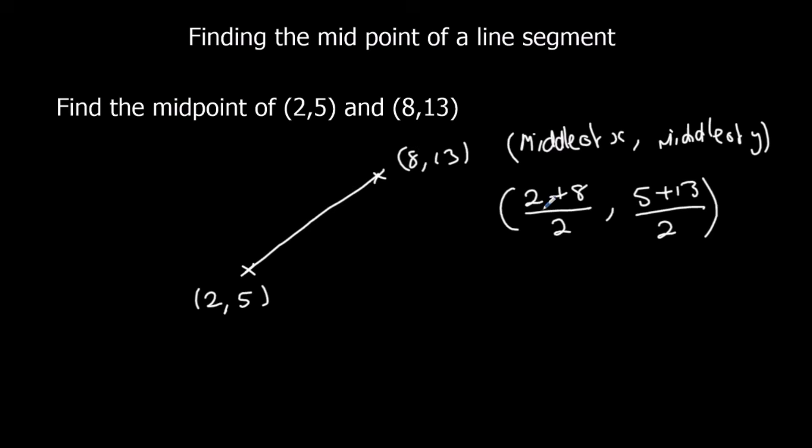So the easiest way to do that, add them up and half them. So, 2 plus 8 is 10, half of it is 5. 5 plus 13 is 18, half that is 9. So that is how we find the midpoint of a line segment.